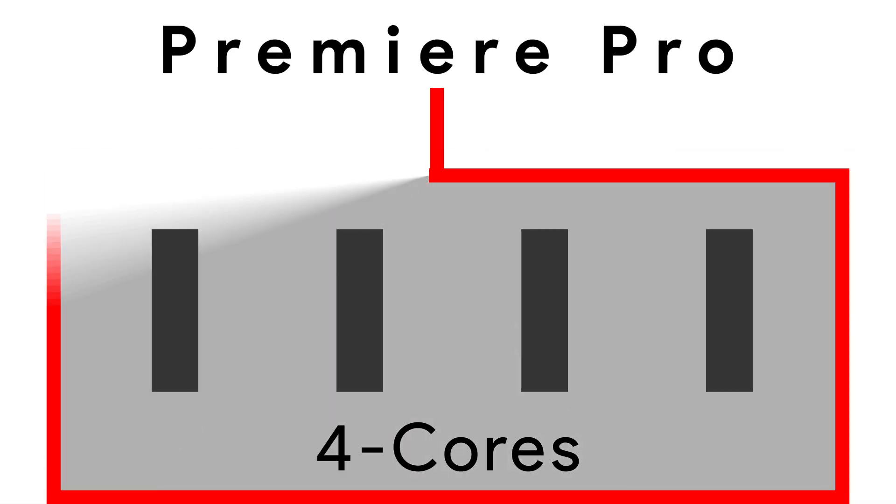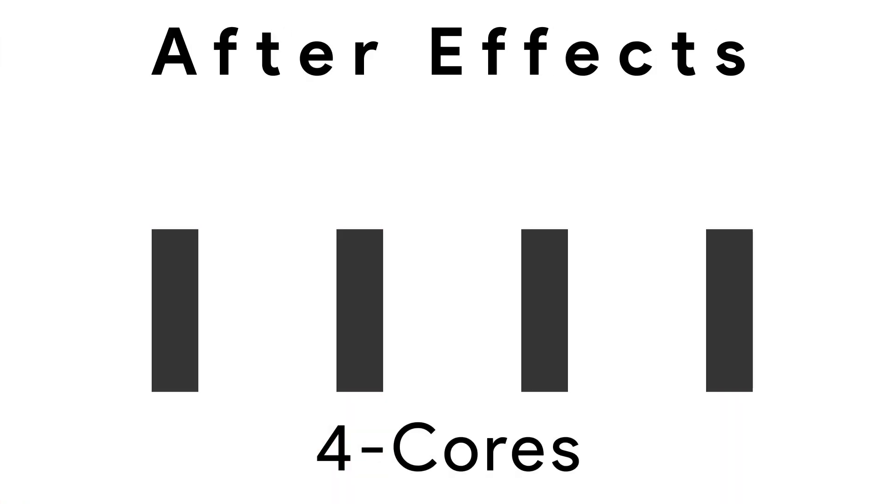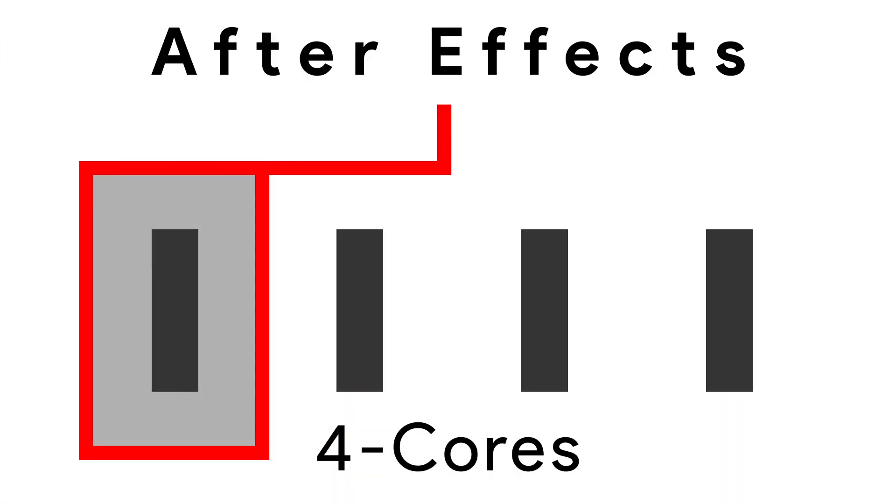One thing I want to mention is that certain editing softwares utilize cores differently. For instance, Premiere Pro utilizes all of your cores at once, whereas After Effects optimizes for one individual core's clock speed. Kind of annoying if you think about it, because now we have two programs that work in an inverse fashion when it comes to utilizing your CPU. The major takeaway is you should check with the editing software you spend most of your time in and see what it optimizes for.